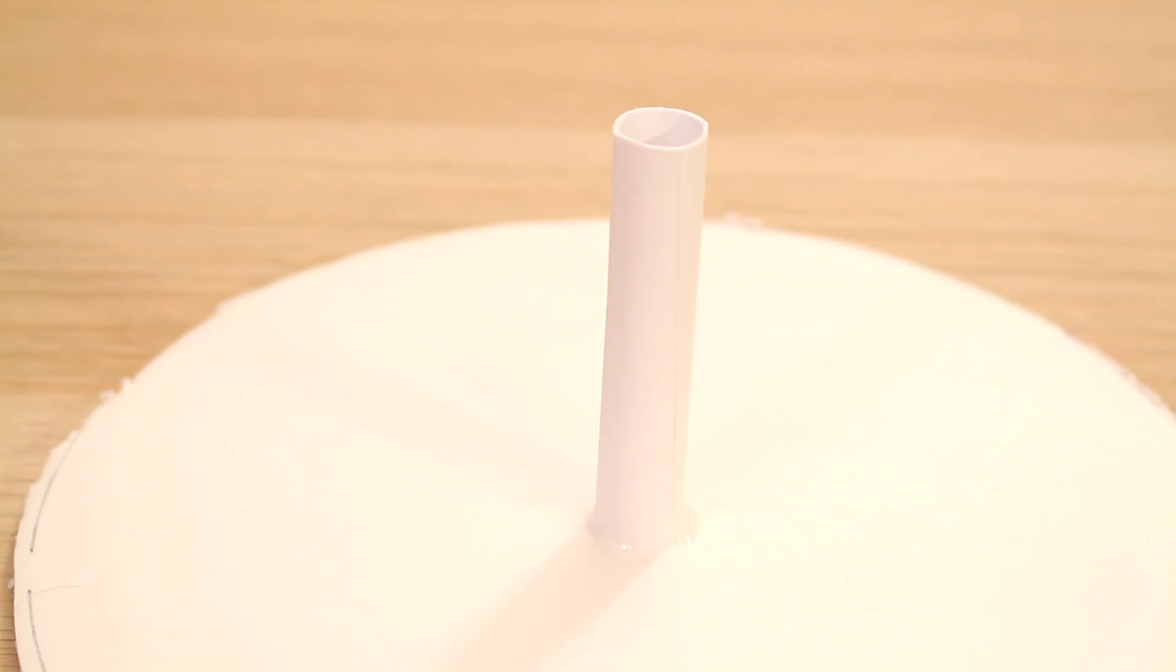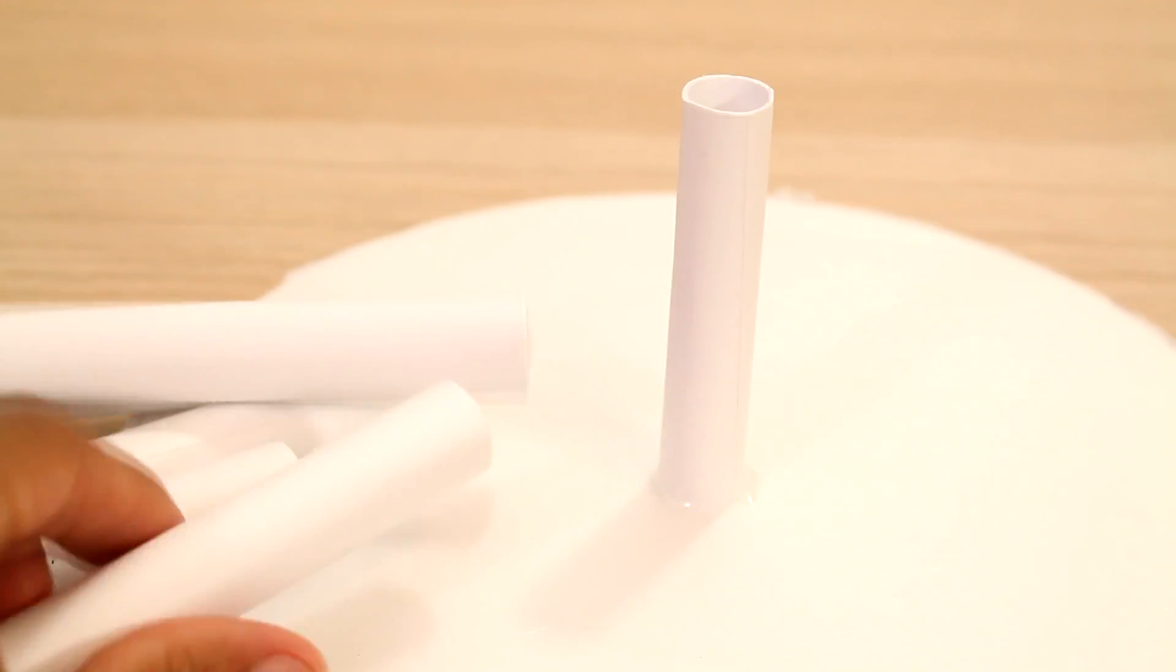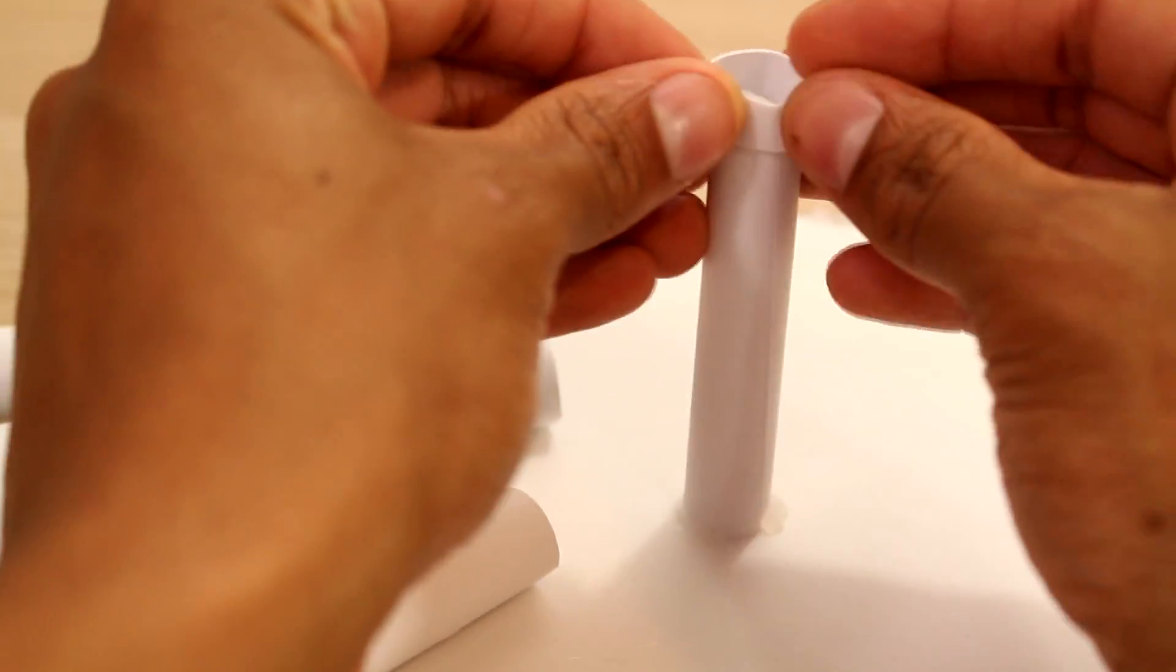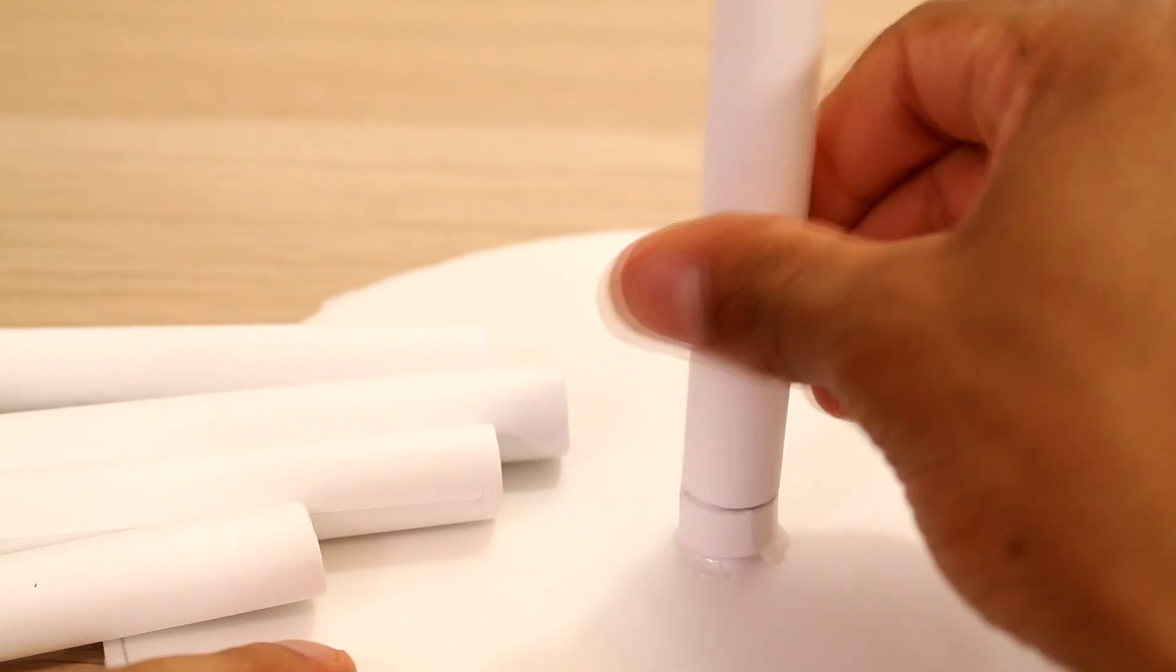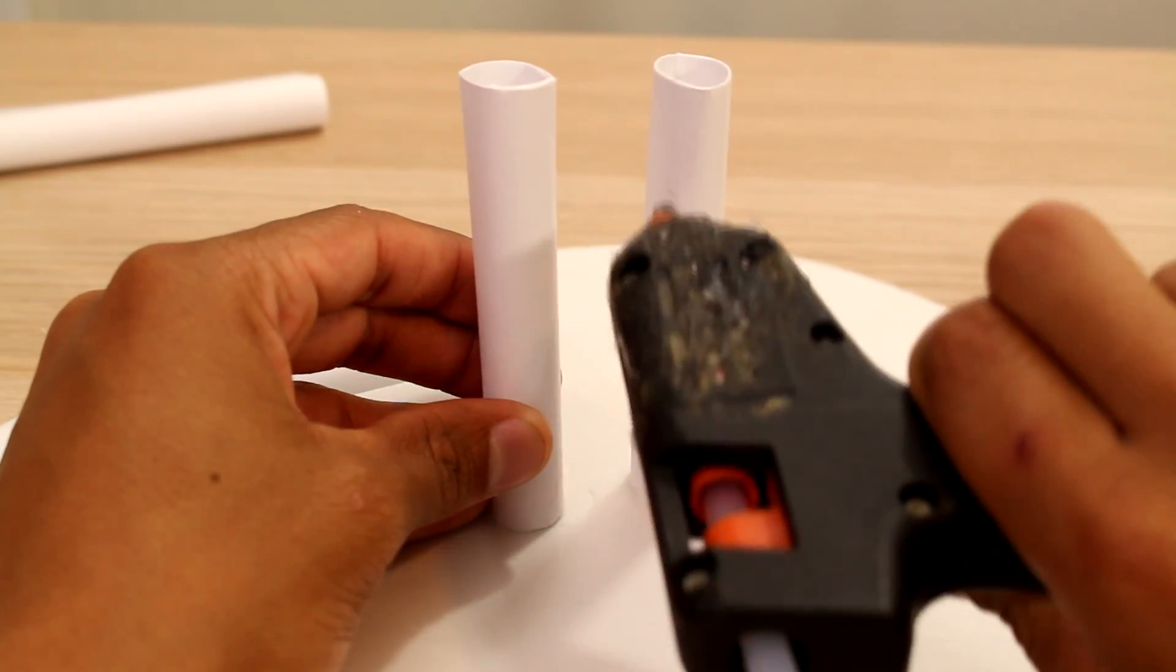Now we'll go ahead and cut our big cylinder to size and then we can make sure it fits right over top. And as you can see it rotates pretty nicely.